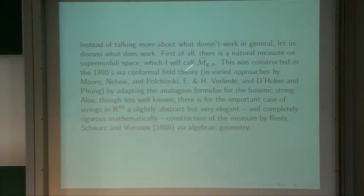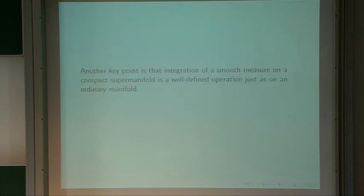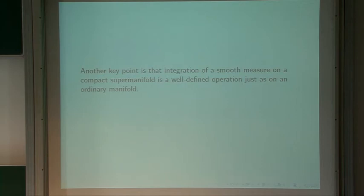We need to know a few more things. First, there's a natural measure. Second, there's a completely well-defined operation of integration on a compact supermanifold, just as there is on a compact bosonic manifold. A smooth measure on a compact supermanifold can be integrated just like you can integrate over an ordinary compact manifold. Physicists know this — otherwise supergravity doesn't make any sense in superspace, and supergravity in superspace is a well-developed subject.